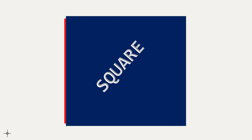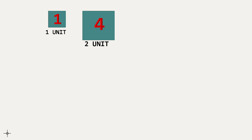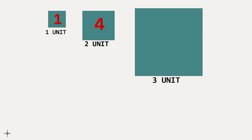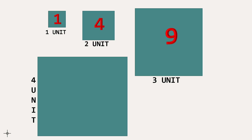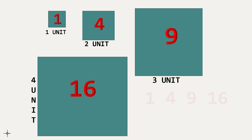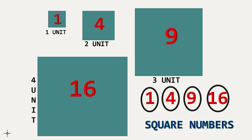The area of that square is related to the square number. Suppose we take a square of side 1 unit — its area is 1×1 = 1 square unit. For a square of side 2 units, the area is 2×2 = 4. For side 3 units, the area is 9. For side 4 units, the area is 16 square units. So the numbers 1, 4, 9, 16 are a special type of numbers called square numbers.